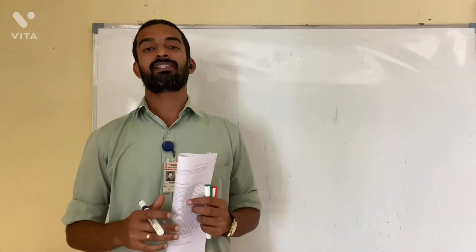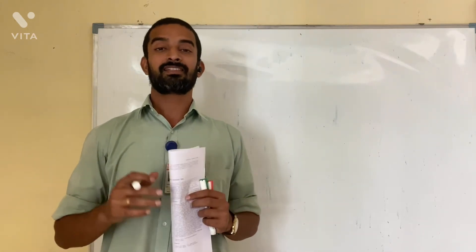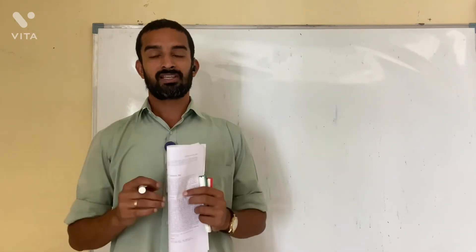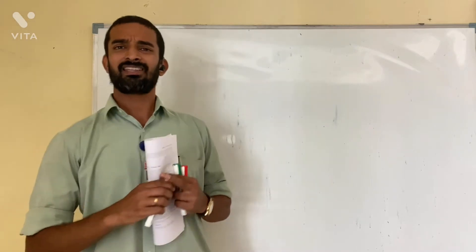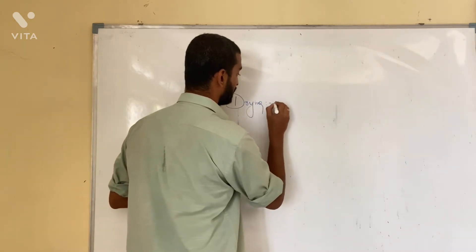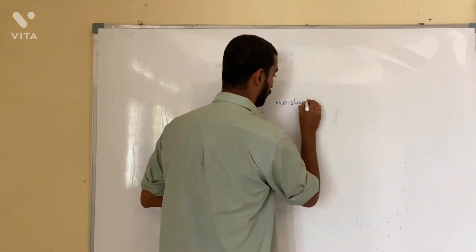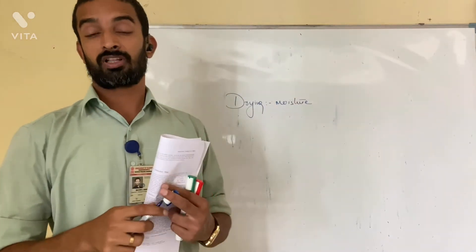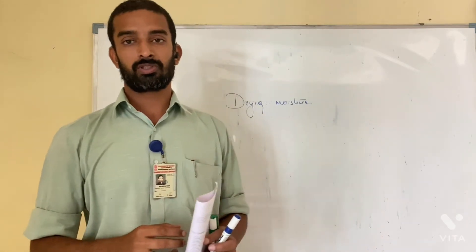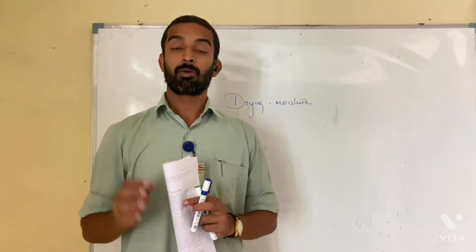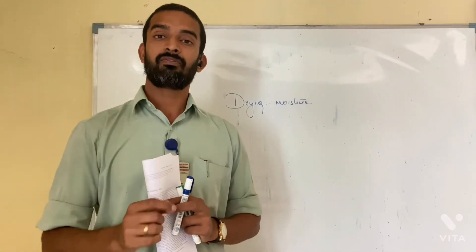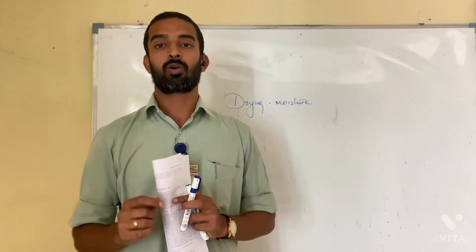The first thing that comes to our mind when we talk of drying is the drying of clothes. When you tell anyone about drying, the first thing that comes to mind is the drying of clothes. Yes, drying is considered to be removal of moisture. But drying is not only removal of moisture from your clothes — it can be removed from any solid, such as wooden pieces, paper, or any other substance. But the most important thing is: how are you removing the moisture? That defines whether we can call this drying or not.